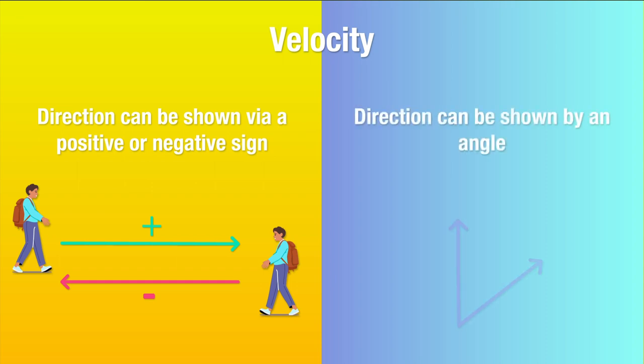For objects reducing the displacement between them and the reference point, that is, objects that are moving towards the reference point, their velocity is negative. And for objects increasing the displacement between them and the reference point, that is, they are moving away from the reference point, the velocity is positive.